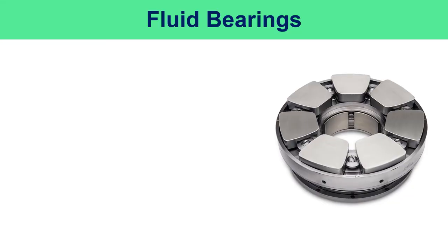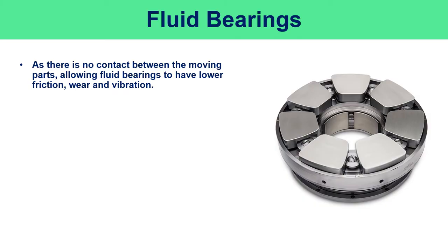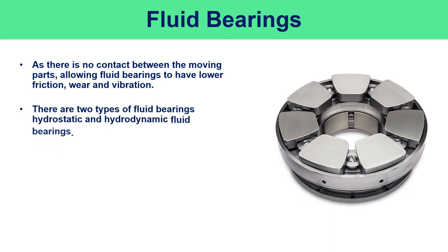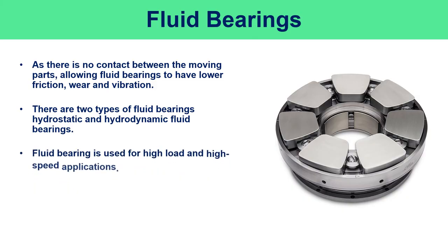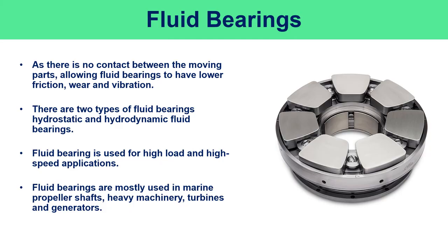Fluid bearings are bearings in which the load is supported by a thin layer of rapidly moving pressurized liquid or gas between the bearing surfaces. As there is no contact between the moving parts, there is no sliding friction, allowing fluid bearings to have lower friction, wear, and vibration. There are two types: hydrostatic and hydrodynamic. Fluid bearings are used for high-load and high-speed applications and are mostly used in marine propeller shafts, heavy machinery, turbines, and generators.